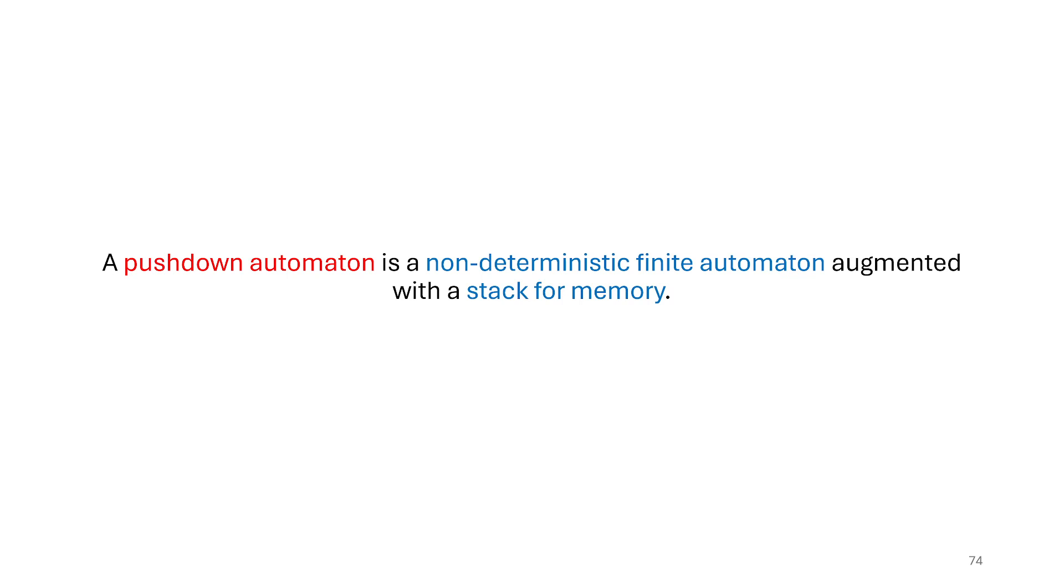So in our normal DFAs and NFAs, in the finite automata as we've looked at so far, the only memory we have in the model is the state. In the pushdown automata we also have this extra memory which is a stack. We think of a data structure as augmenting the machine and the machine can always access the stack as it's operating and performing its operations.